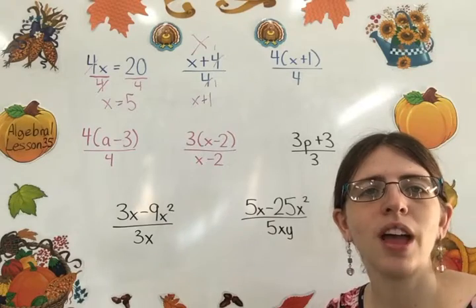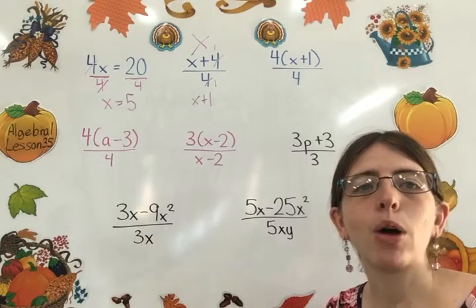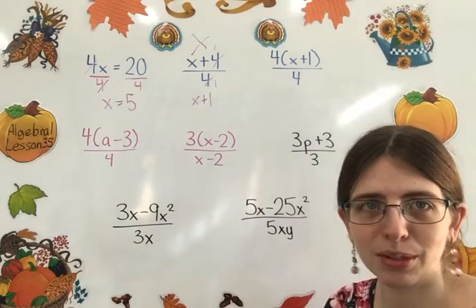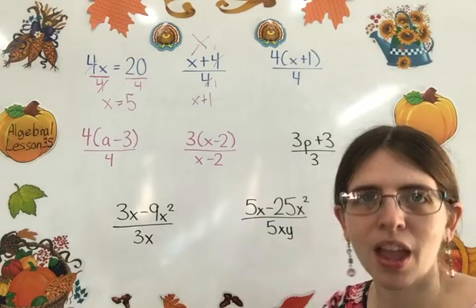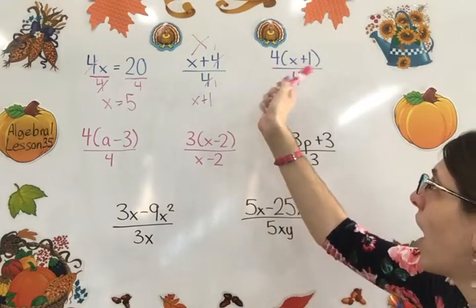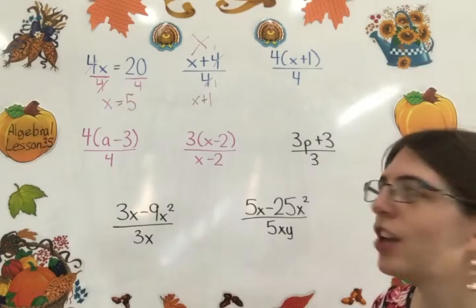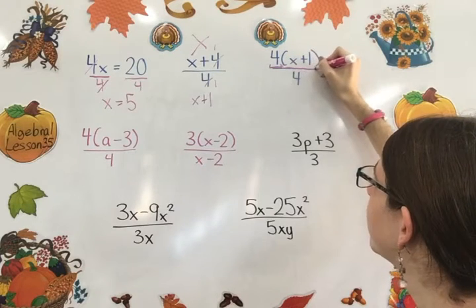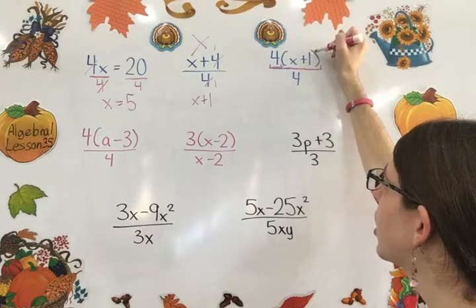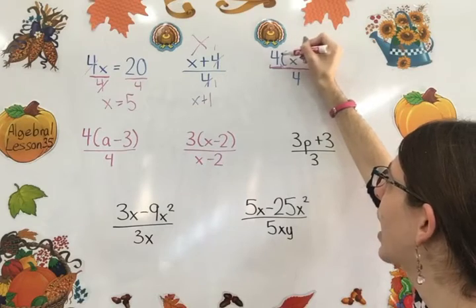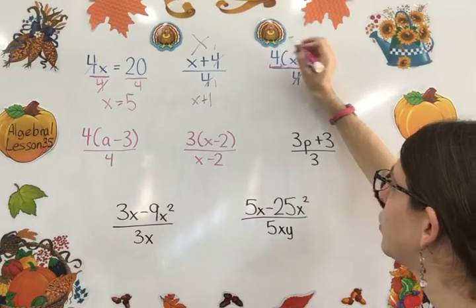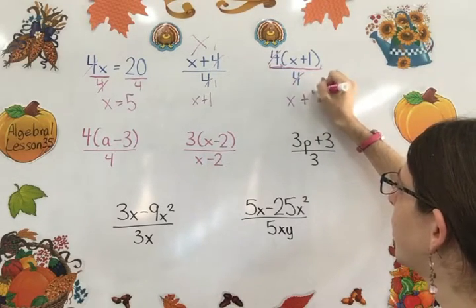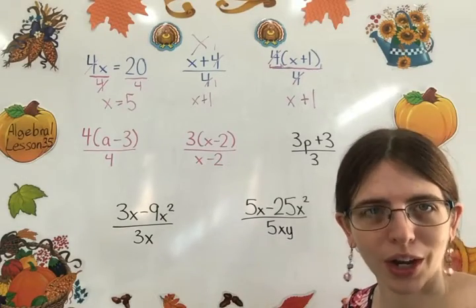You can only cancel numbers or letters that are being multiplied. You see here, this is x plus 4, not x times 4. So you can't cancel it. But look over here. Let's try this one. 4 times x plus 1. So your factors are 4 and x plus 1. So this is one term, one factor. Another term, another factor. Now I can cancel. I can reduce this 4 to 1, and it becomes x plus 1. That will work.